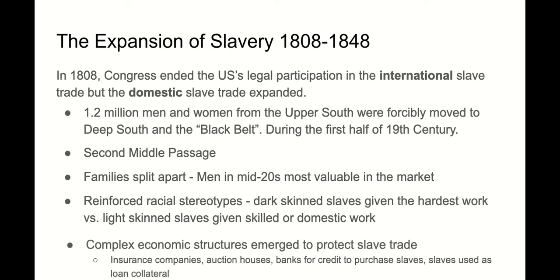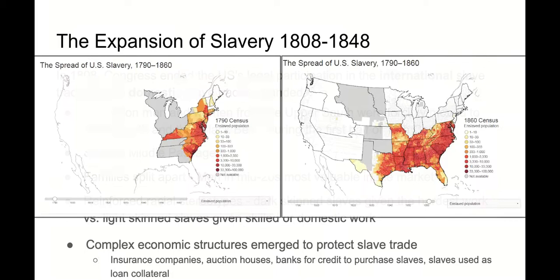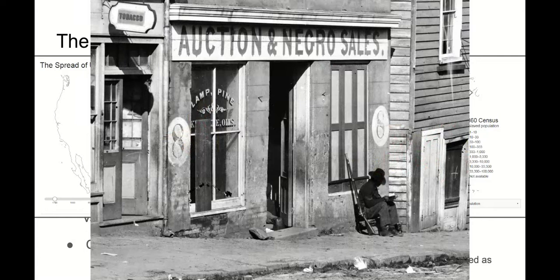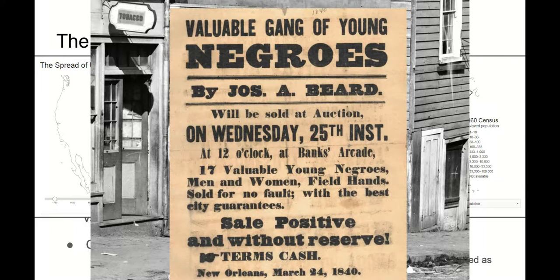The United States had a complex economic structure that revolved entirely around slavery. This included insurance companies, auction houses — you could get loans to buy slaves, mortgage your house to buy slaves, and use slaves as collateral to get loans to buy more property. You can see this reiterated with the spread of slavery from 1790 to 1860. Auction houses were in many towns, particularly port towns, where you would see advertisements from people selling or looking to buy slaves.